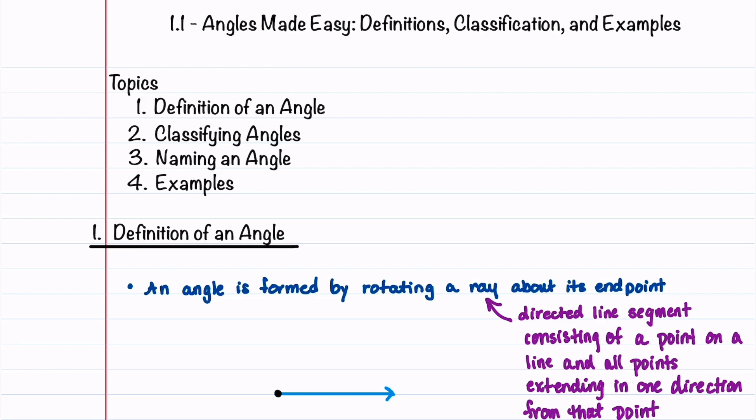Let's begin by looking at the definition of an angle. An angle is formed by rotating a ray about its endpoint. A ray is a directed line segment consisting of a point on a line and all points extending in one direction from that point.